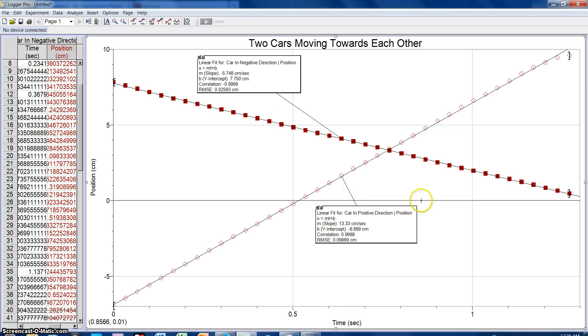As we see here, the line for the car going in a negative direction, which started approximately 8 centimeters in a positive direction from the initial position or starting line.